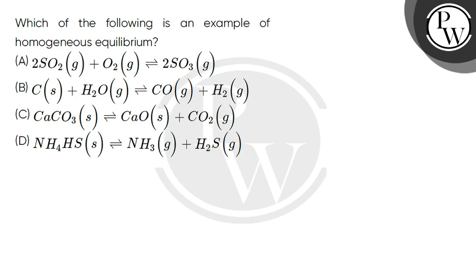If you look at the reactions, in which you can see homogeneous equilibrium? If you look at the first reaction, 2SO2 gas plus O2 gas gives 2SO3 gas. This is homogeneous equilibrium because carbon is in gas and CO2 gas and CO gas.